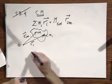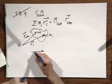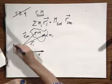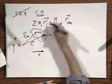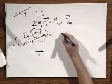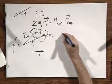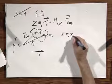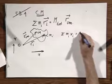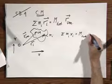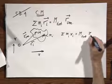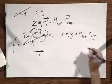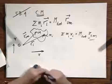You can of course split this into an X direction and a Y direction. You could rewrite this vector equation as: the sum of Mi times Xi equals the total mass times X of the center of mass. And you can do the same writing Y on both sides.